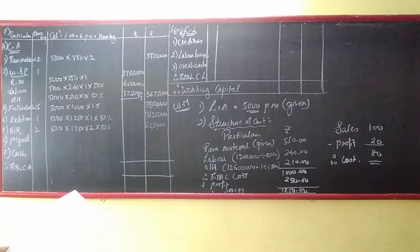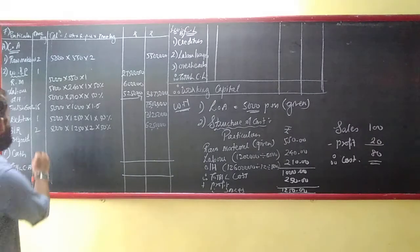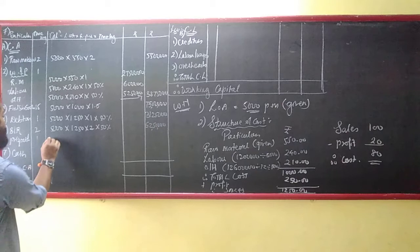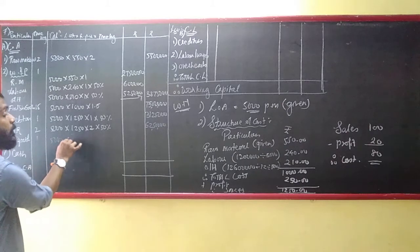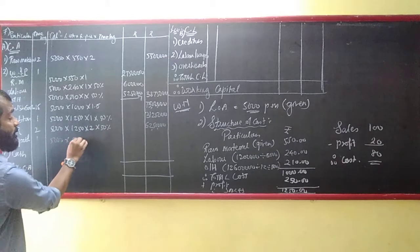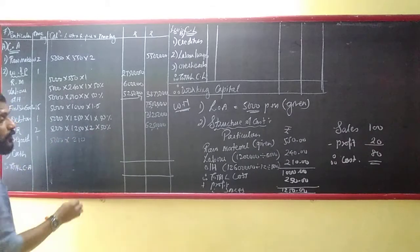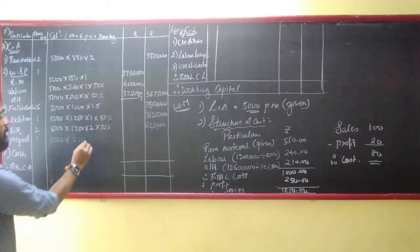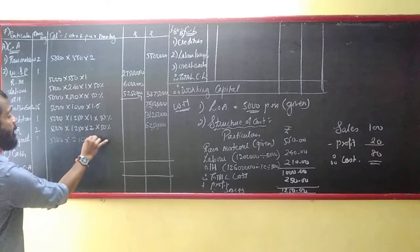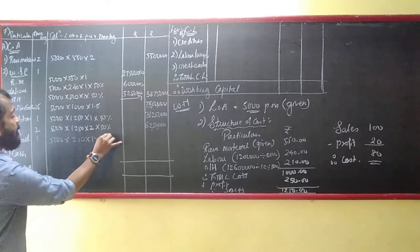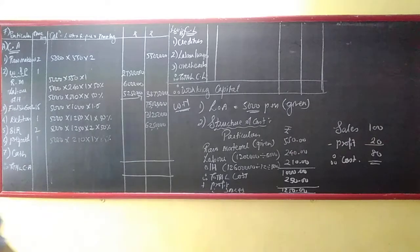25% of expenses are paid one month in advance — that's prepaid. So: 5,000 × ₹210 × 1 × 25%.